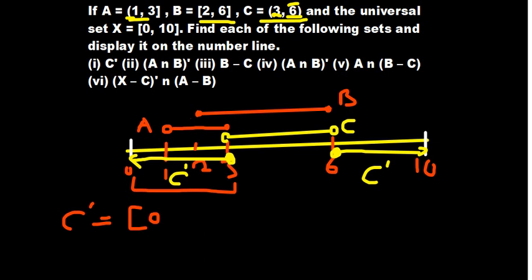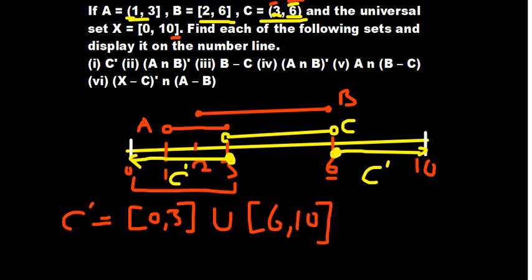Since 3 is not part of C, it is part of the complement, so use a square bracket at 3. This is unionized with the other part: starting from 6 (also not part of C, so square bracket) all the way up to 10. Since 10 is part of the universal set with a square bracket, we close with a square bracket. So C complement = [0, 3] ∪ [6, 10]. This is how you find any complement you may be asked.